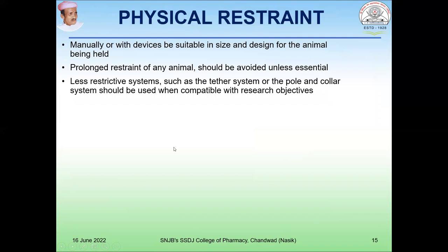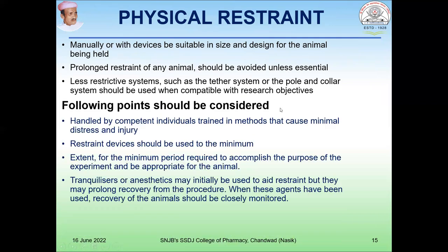Physical restraint is very important. Restraint means holding the animal. Manually or with devices suitable in size and design for the animal, restrainers can be used. You cannot prolong the restraining process as it develops distress. Less restrictive systems such as a tether system or pole-and-collar system should be used when compatible with research objectives. Restraint devices should be used to a minimum and should not hold the animal for longer periods. Tranquilizers or anesthetics may be used while restraining the animal.